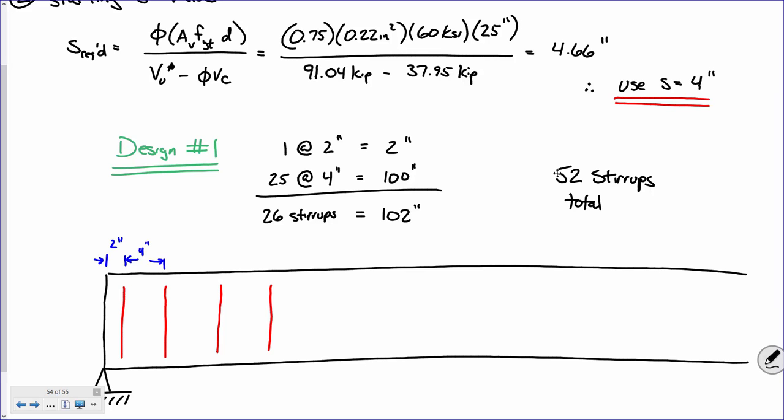What we're going to see is we should be able to cut that design down a little bit. Since all we've done is incorporated the stirrup spacing at the region of worst shear, why don't we try to trim that down by using our maximum stirrup spacing.